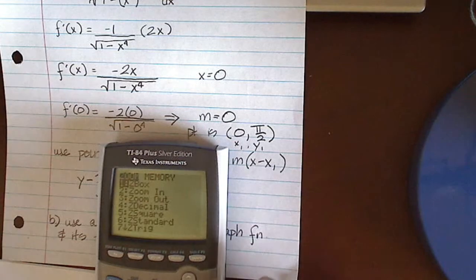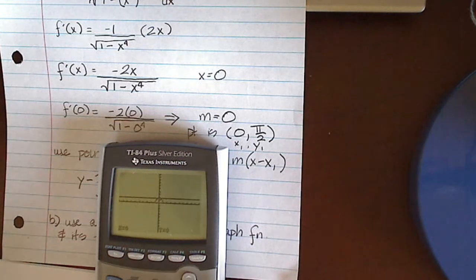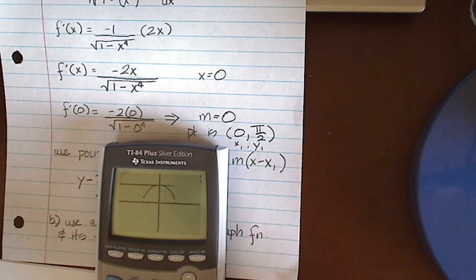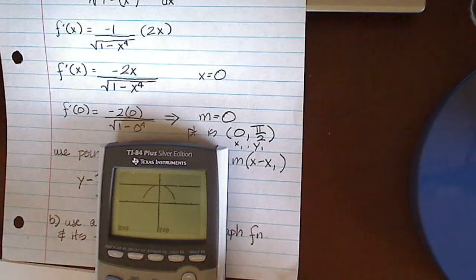So I'm going to zoom in, and I'm just going to zoom in around the origin. There's my graph, and there's my tangent line, and that completes this problem.